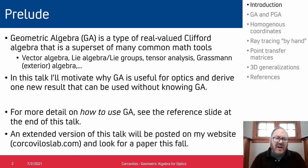And I'm going to discuss geometric algebra as a tool for calculations in geometric optics. So geometric algebra is a type of real-valued Clifford algebra. And the nice thing about it is that it becomes a superset of many common math tools. You can include vector algebra, things like Lie algebras, tensor analysis, Grassmann algebra, quaternions.